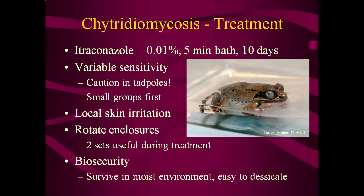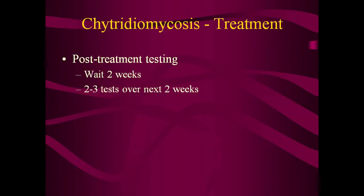Biosecurity during treatment is important. The chytrid fungus has been shown to survive in deionized water for 3–4 weeks, sterilized lake water for 7 weeks, and moist river sand for 3 months. However, infective zoospores are very susceptible to desiccation; therefore transmission usually requires moist or wet materials and tools or direct animal contact. Samples for PCR testing should be obtained 2 weeks after the end of treatment. This allows animals to finish shedding skin that might contain inactivated or dead chytrid organisms that will show up on the PCR test. To be sure the infection is cleared, it is recommended that animals are tested 2–3 times post-treatment over a 2-week period. Treatment can be repeated if unsuccessful the first time.